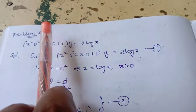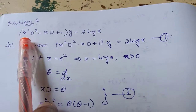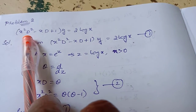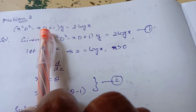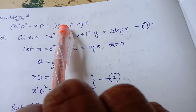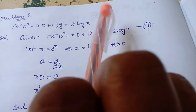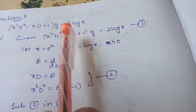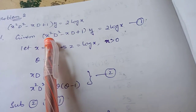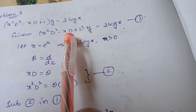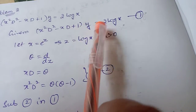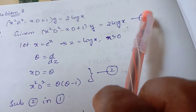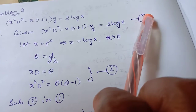We will see problem 2. The problem is x squared D squared minus xD plus 1 into y equal to 2 log x. We are writing the given equation x squared D squared minus xD plus 1 into y equal to 2 log x, taking this as equation 1.